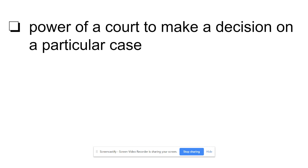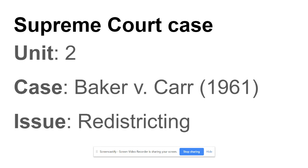Jurisdiction is important because the Supreme Court case we're going to look at has to do with it. Grab your yellow sheet. The case is Baker v. Carr, Unit 2. The case started in 1961 and the issue is redistricting. Baker is named first because Baker is the person suing; Carr represents the state of Tennessee — he was the attorney general, the chief law lawyer of the state. Baker is a citizen of Tennessee suing the state over redistricting.